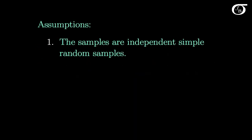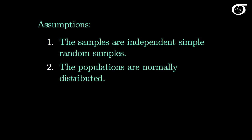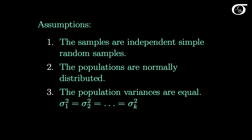Specifically, we are assuming that we have independent simple random samples, that the populations are normally distributed, and that the population variances are equal. Or in other words, σ₁² through σₖ² are all equal. And we sometimes say that that's equal to some common variance σ².